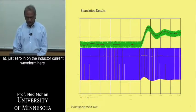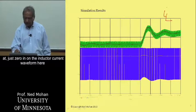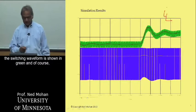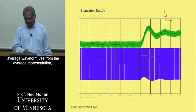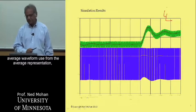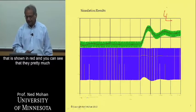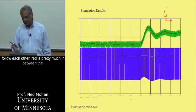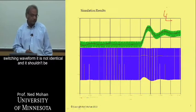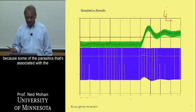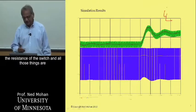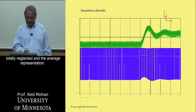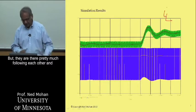Looking at the inductor current waveform, the switching waveform is shown in green with switching frequency information, while the average waveform from the average representation is shown in red. They follow each other closely — the red waveform sits in between the switching waveform. They are not identical because parasitics such as diode voltage drop and switch resistance are neglected in the average representation, but they track each other well.